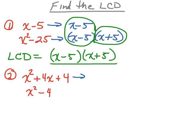x squared plus 4x plus 4 — since this is a trinomial with a leading coefficient of 1, we know that we are multiplying two binomials. x times x will give us the x squared. I need factors of 4 that also add up to 4. Those two numbers are positive 2 and positive 2. If I multiply 2 times 2 I get 4, and 2 plus 2 also gives 4. So these are my factors of x squared plus 4x plus 4.